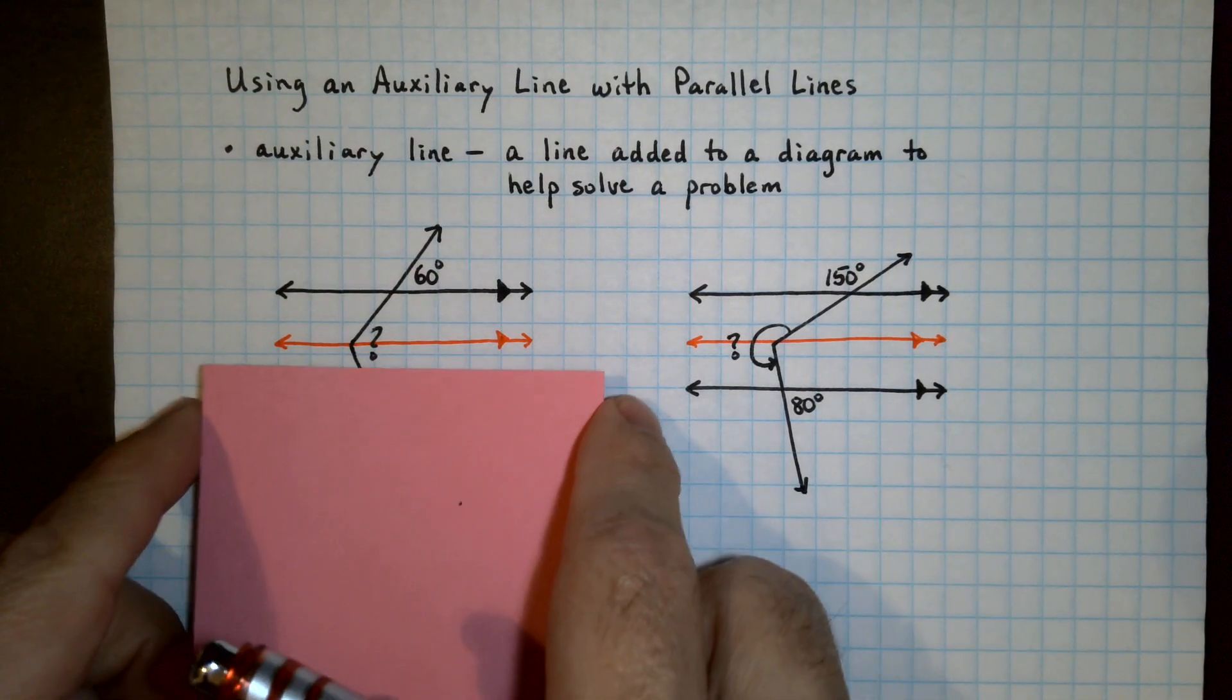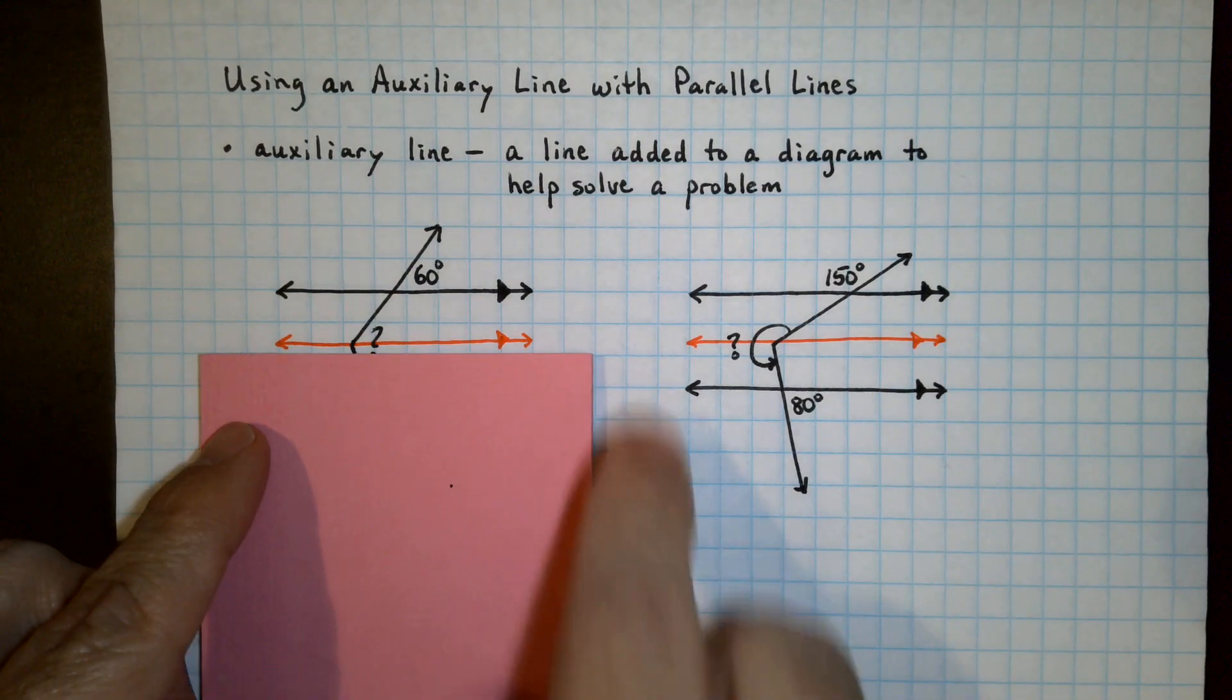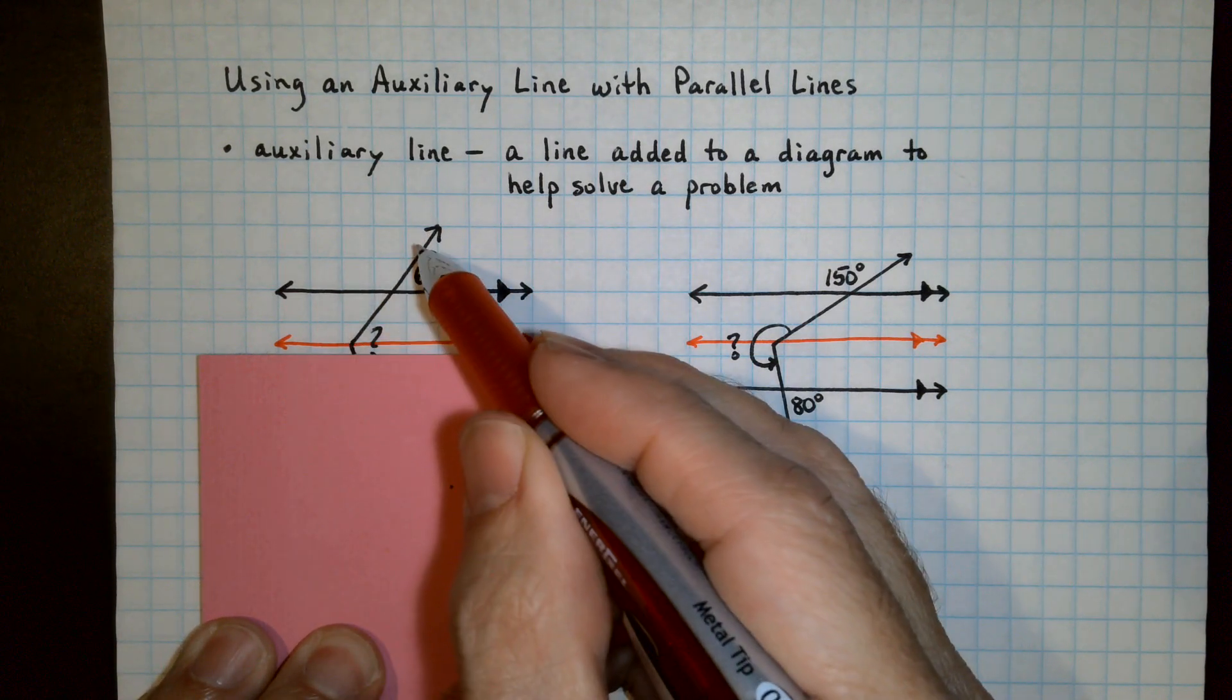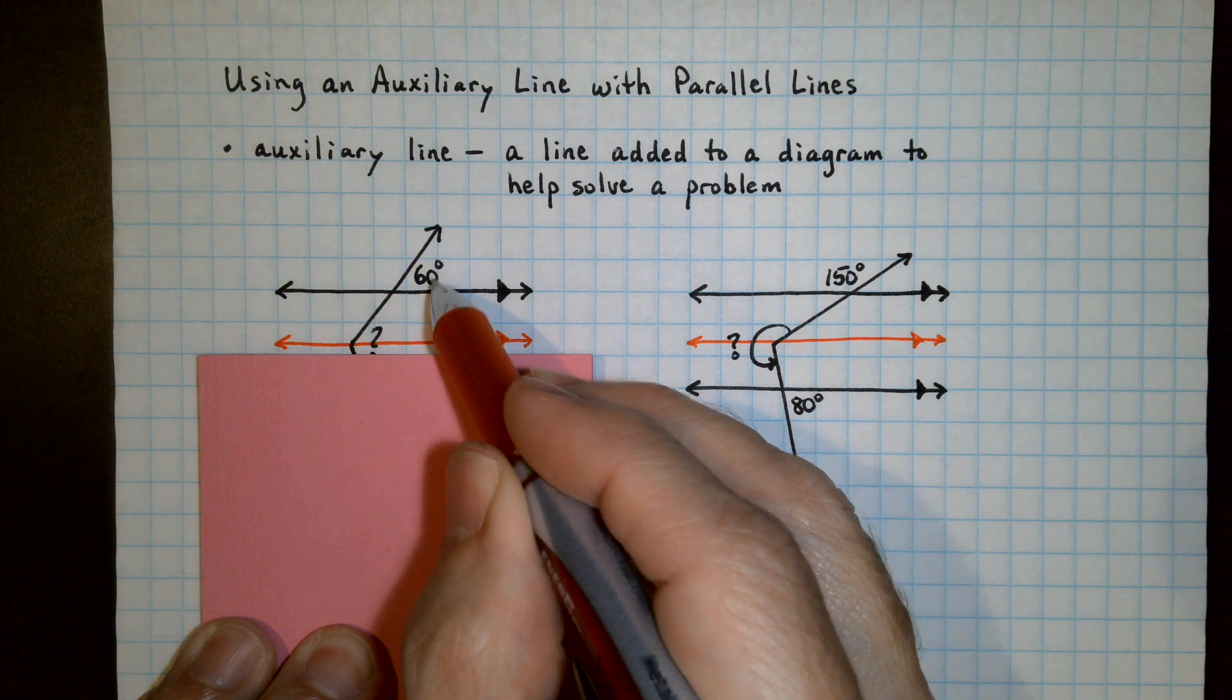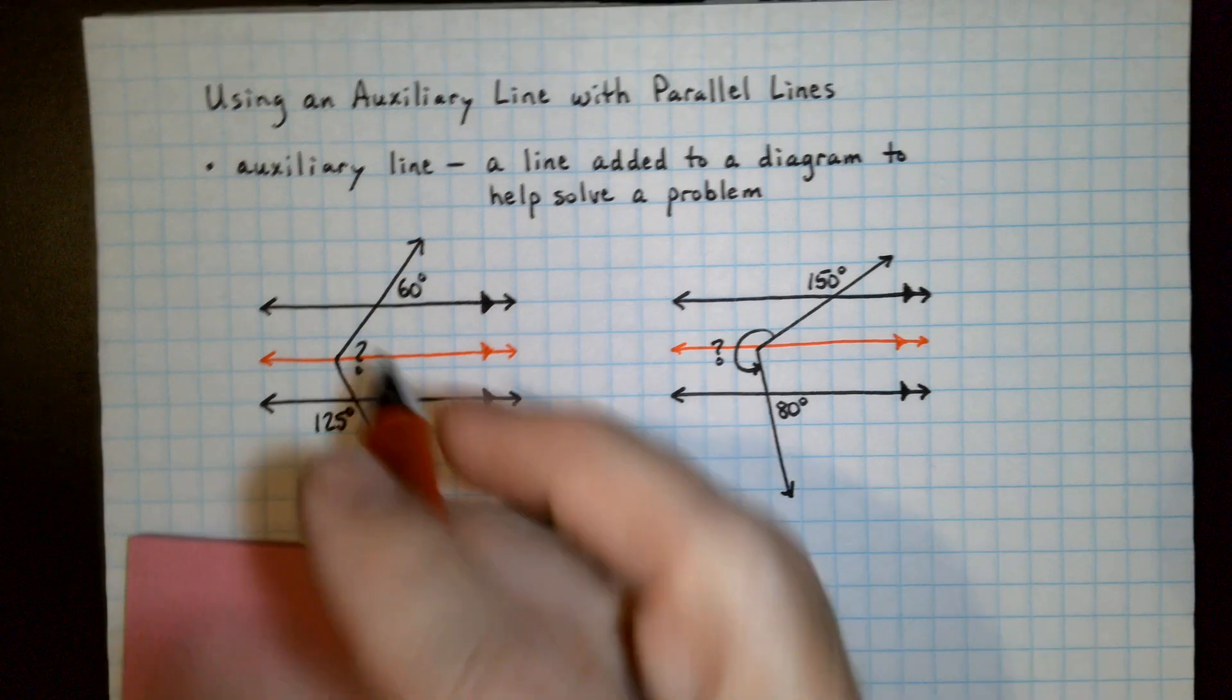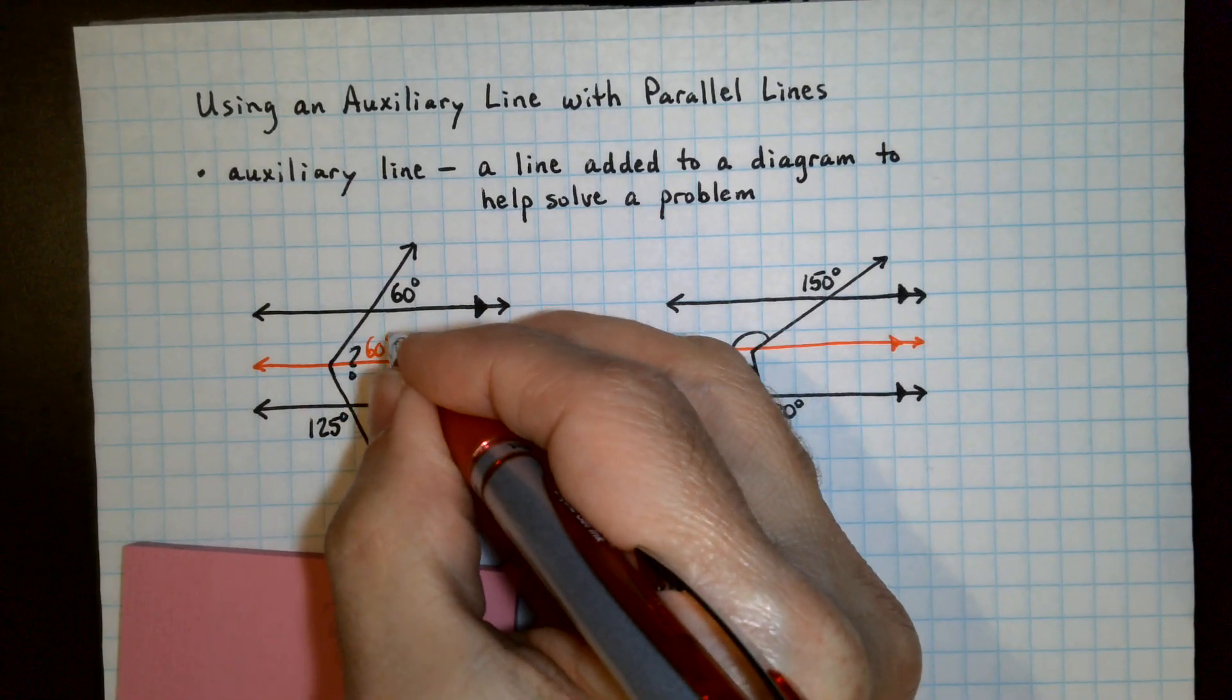If you cover up the bottom what you'll see is two parallel lines and this line can be thought of as your transversal. This 60 degree angle and this part of the angle that we're looking for are corresponding so they are going to be the same.